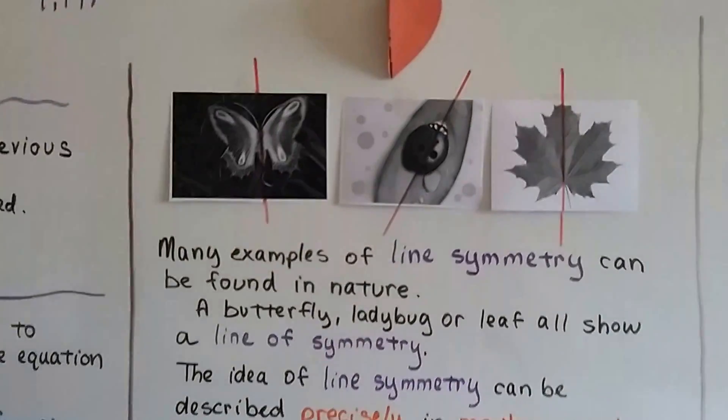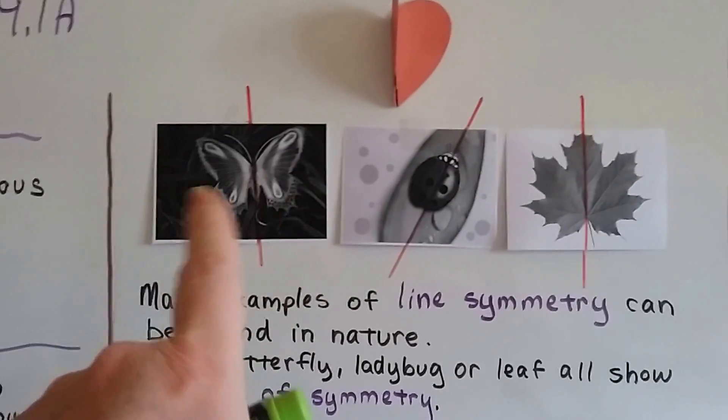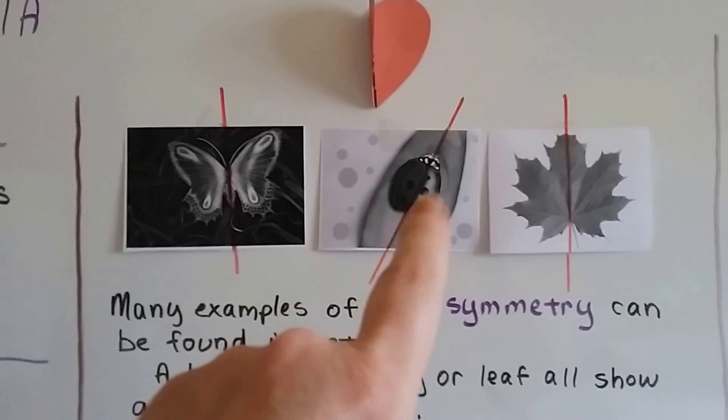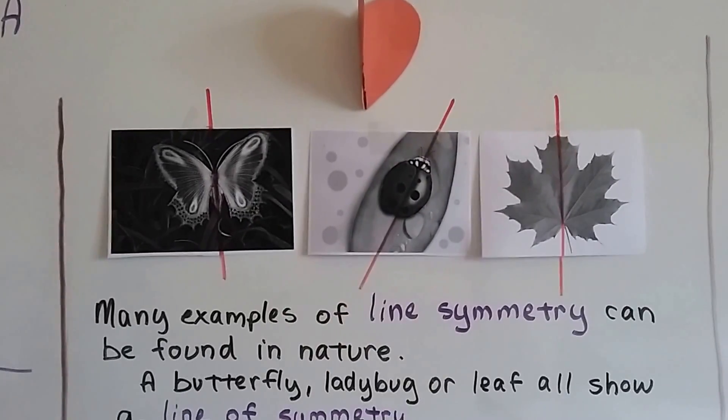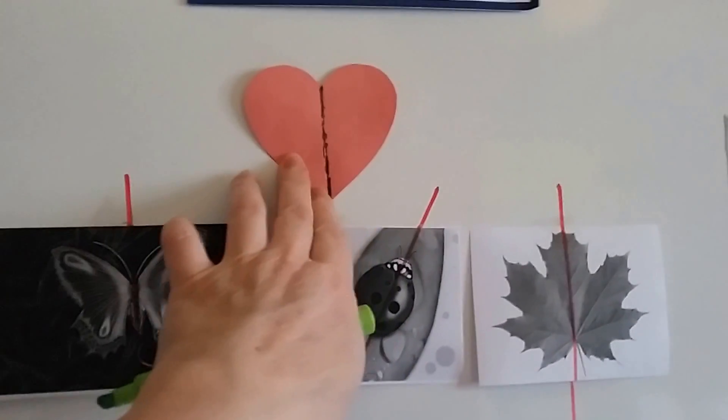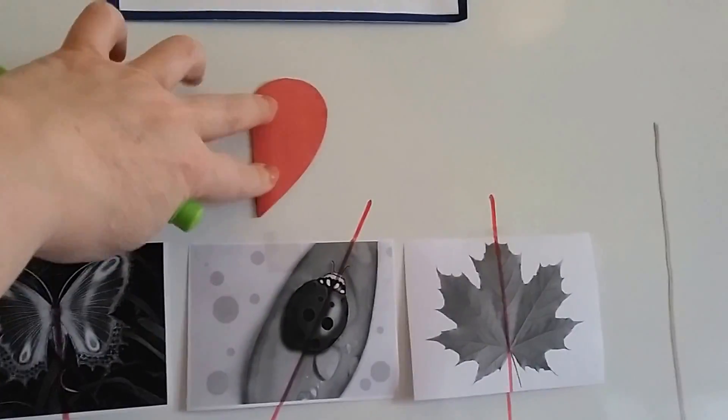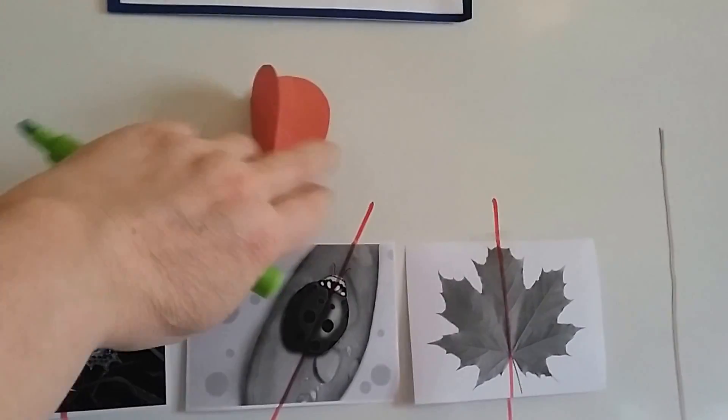There's many examples of line symmetry found in nature. A butterfly is symmetrical. A ladybug, sorry that it's not red, I've got a black and white printer. A maple leaf is symmetrical. And even this little heart that I always use in my symmetry videos. I use this for the grade school symmetry videos. When you fold it in half, it's a perfect half, isn't it?